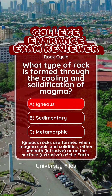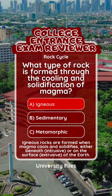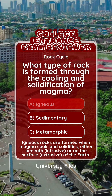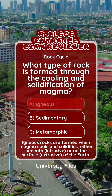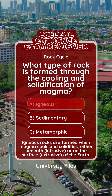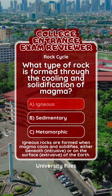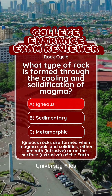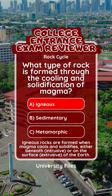The correct answer is letter A, igneous. Igneous rocks are formed when magma cools and solidifies, either beneath (intrusive) or on the surface (extrusive) of the Earth.